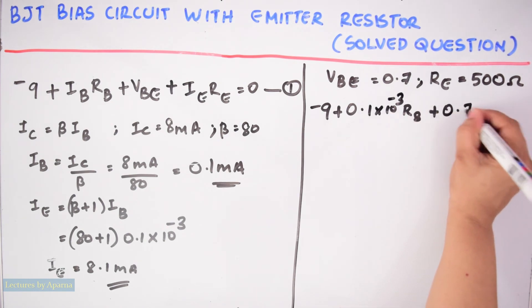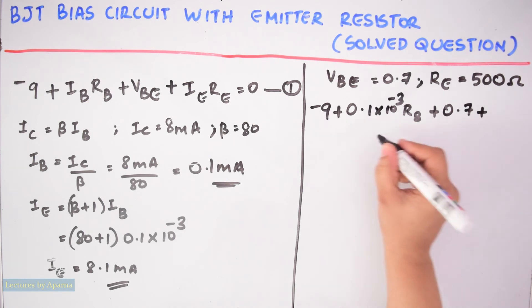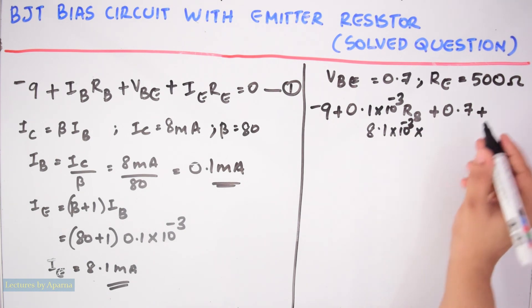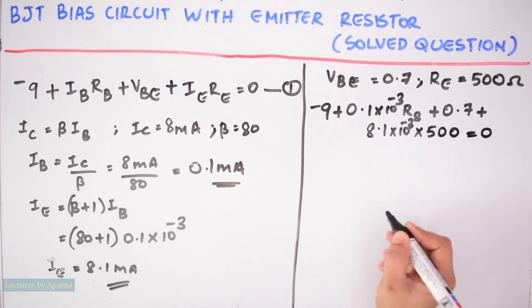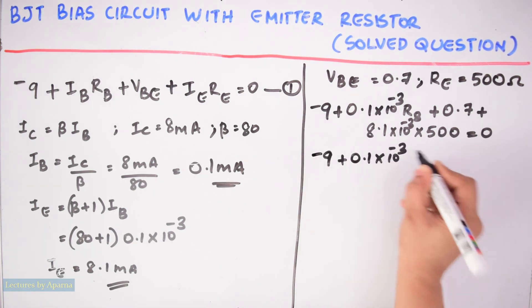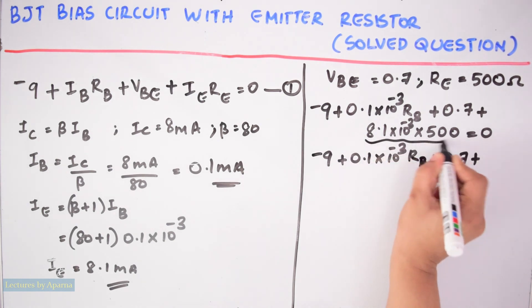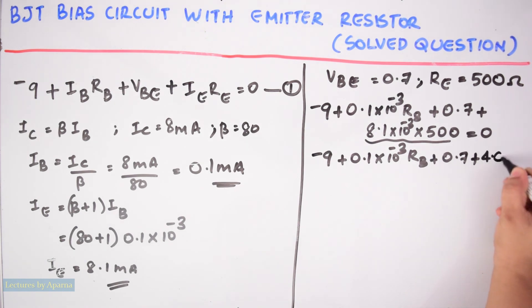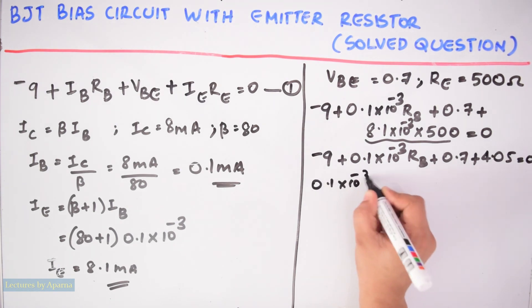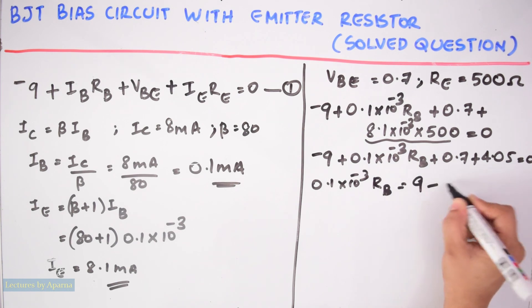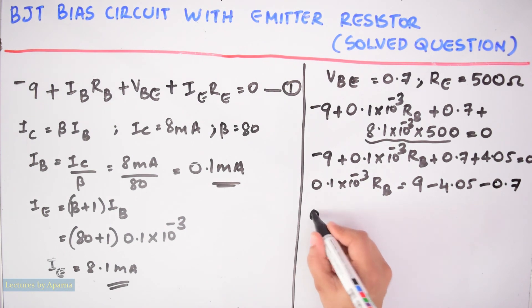So we can write it as minus 9 plus IB is 0.1 into 10 raise to minus 3 RB plus VBE is 0.7 plus IE RE. IE is 8.1 into 10 raise to minus 3 into 500 is equal to 0.